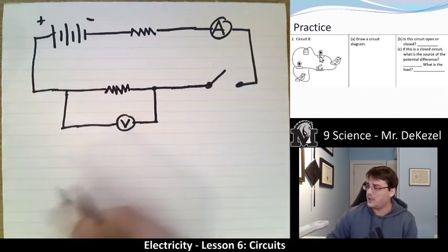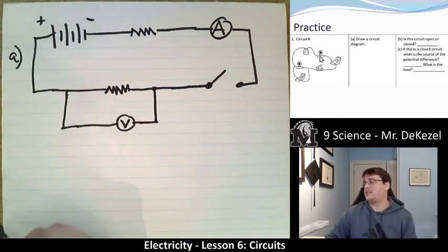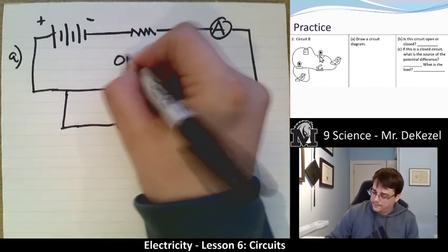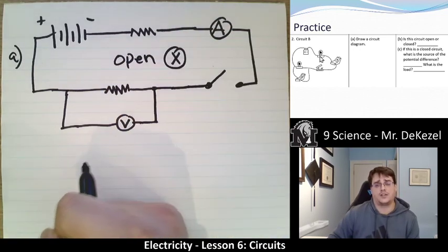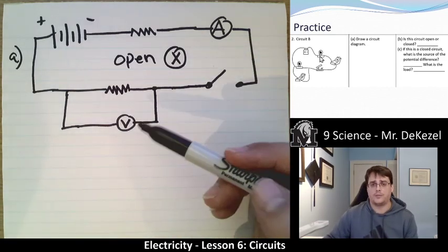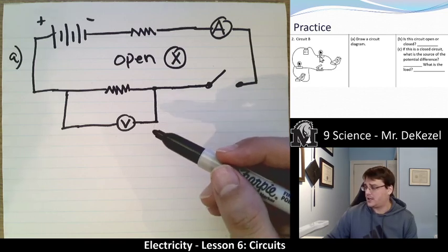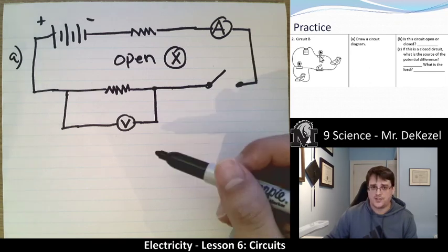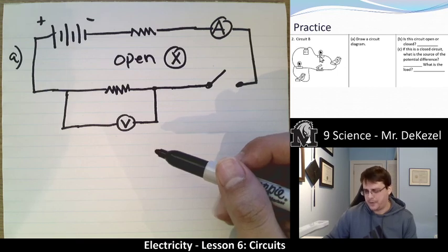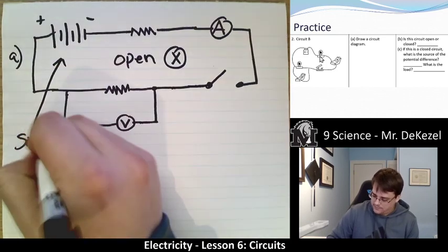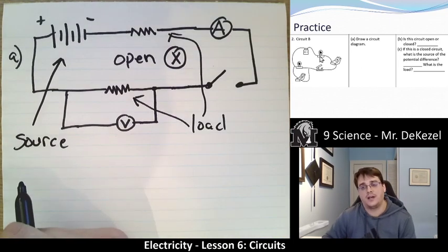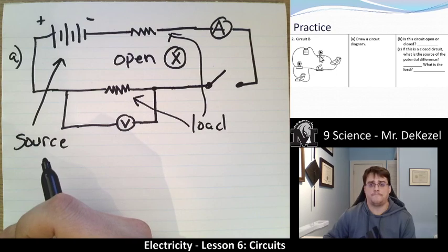So that is circuit diagram B done. Is this circuit open or closed? In this case we have an open switch, so this circuit is open. That means that right now electricity cannot flow through. If we were to close this switch, it would work and we would power our light bulbs. The circuit isn't closed so technically I don't need to answer what the source and load are — but the source would be the battery and the load would be the resistor, and this would only be working if there was a potential difference and the circuit was closed.